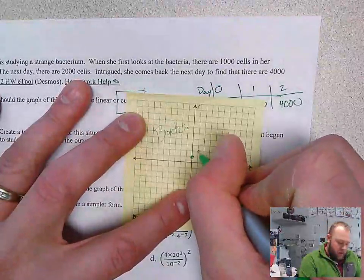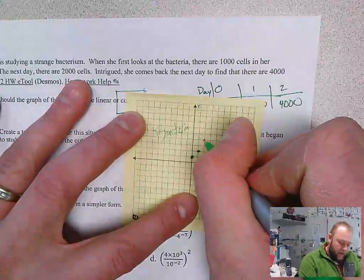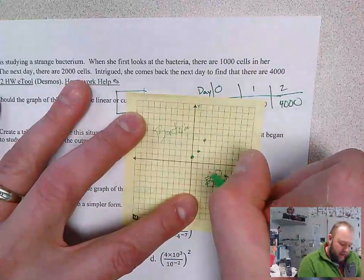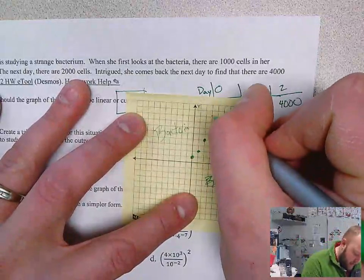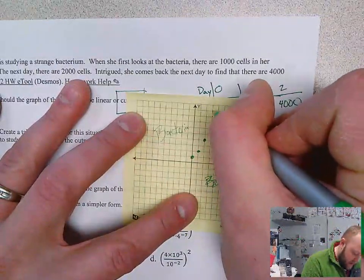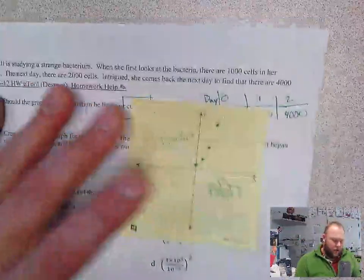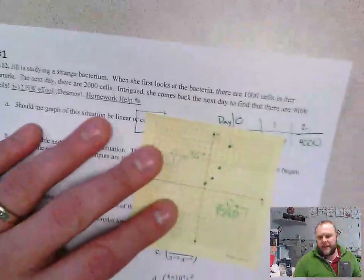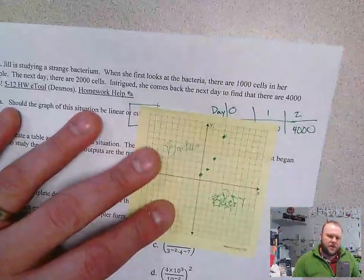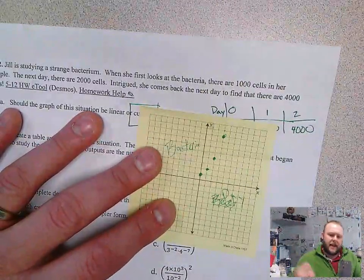Day one, 2,000. Day three... Day two, 4,000. If we keep up this pattern, day three, there's going to be 8,000. And we're going to see that continue to grow. Let's think about this. Is this going to be continuous or discrete? Probably continuous. Let's think about that.